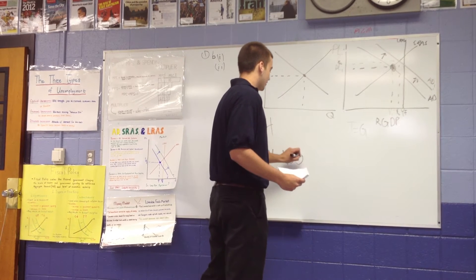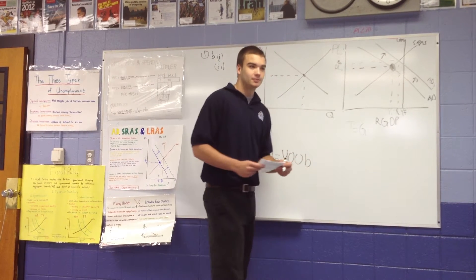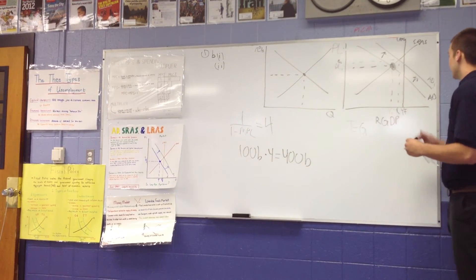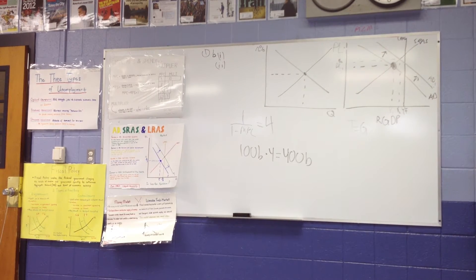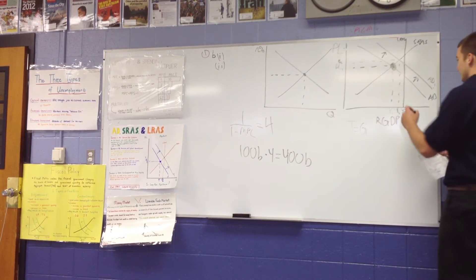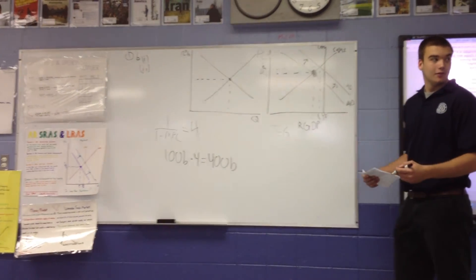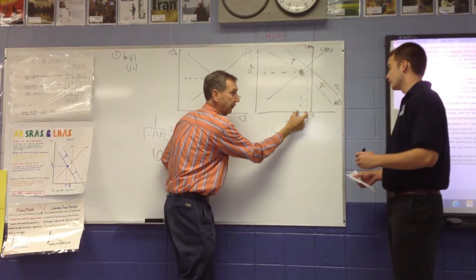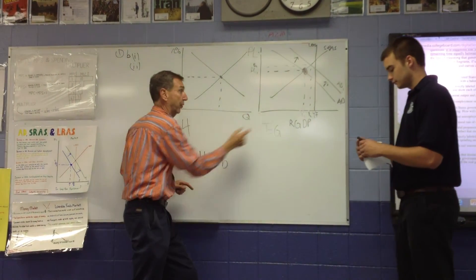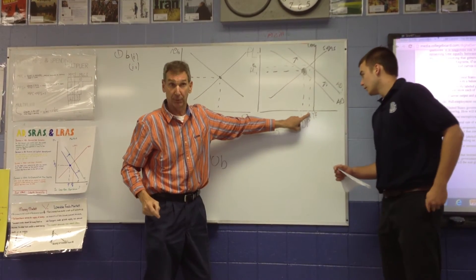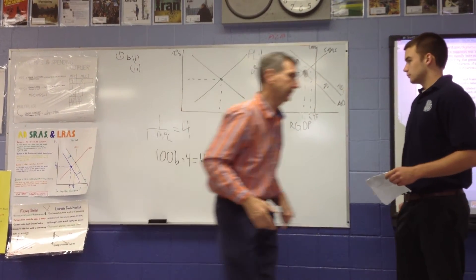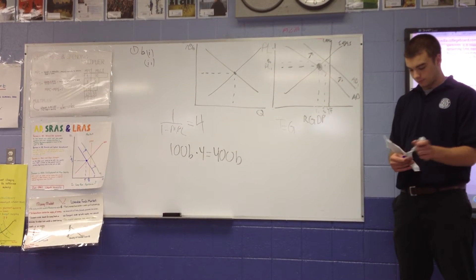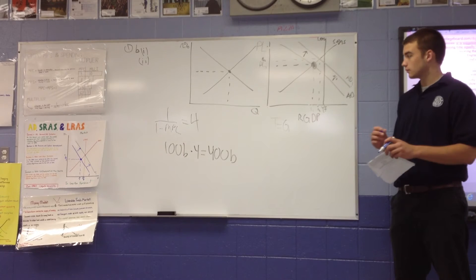Can you show on the graph where that $400 billion would be? Yeah, so the $400 billion would be the change in real GDP. So, for $100 billion of spending by the government, this change right here would go to $400. So 100 times the 4 in the multiplier, this would change by 400. The total increase in GDP is $400 billion.